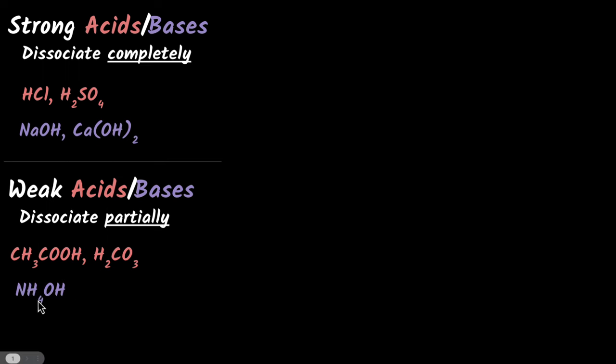The same is the case with bases. For example, if you have ammonium hydroxide and put it in a solution, it doesn't completely dissociate — you'll get only very few OH⁻ ions and NH₄⁺ ions, and that's why it is called a weak base.